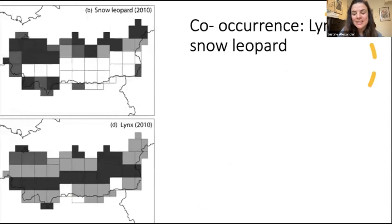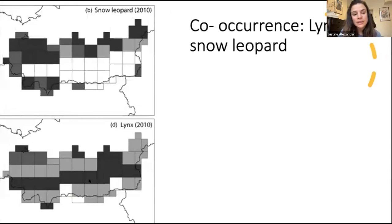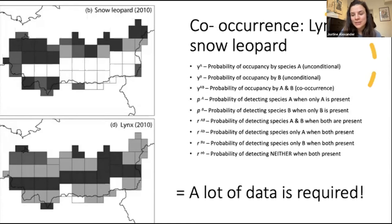The lynx and snow leopard dynamic Kustub mentioned is a great example from this study — they looked at multiple time periods and multiple species. The two species seemed to mirror each other, with lynx occupancy higher in areas where snow leopards were probably not occurring. They also examined co-occurrence of both species, but co-occurrence models add many additional parameters, requiring a lot of data — something to note if planning such complex models.